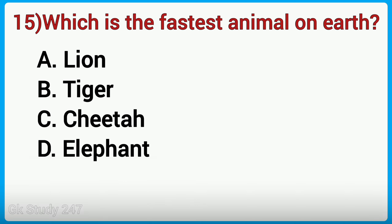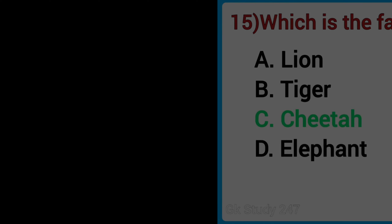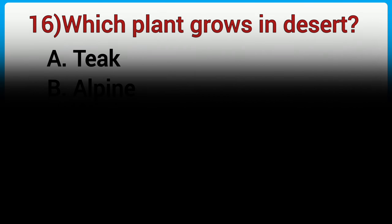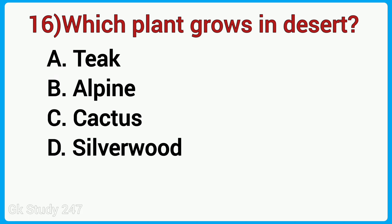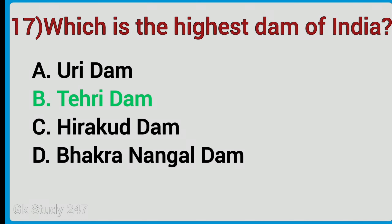Which is the fastest animal on Earth? Answer is Cheetah. Which plant grows in the desert? Answer is Cactus. Which is the highest dam of India? Answer is Tehri Dam.